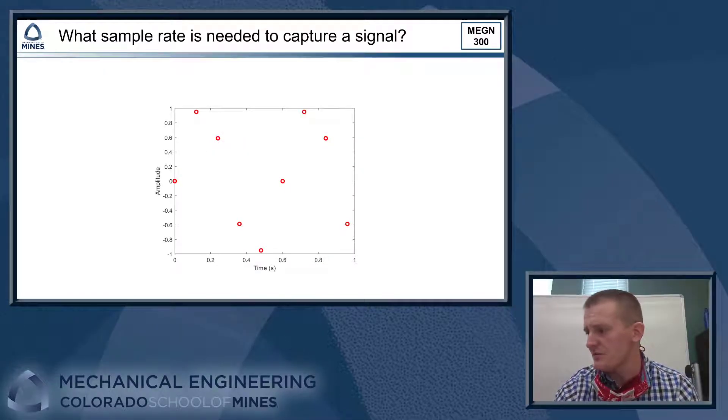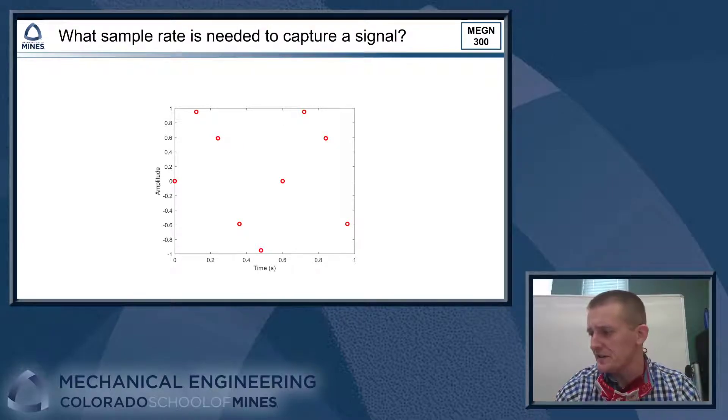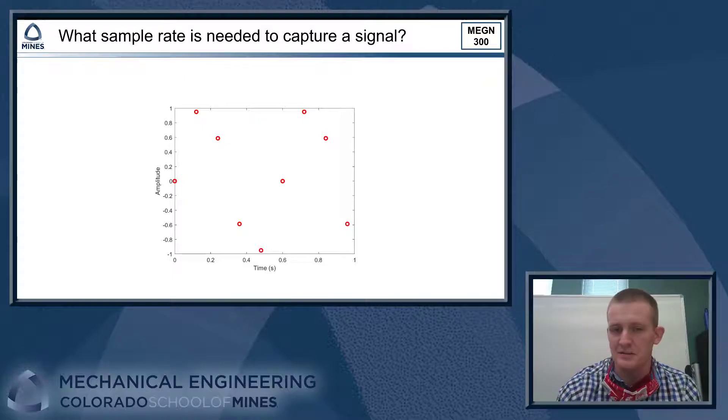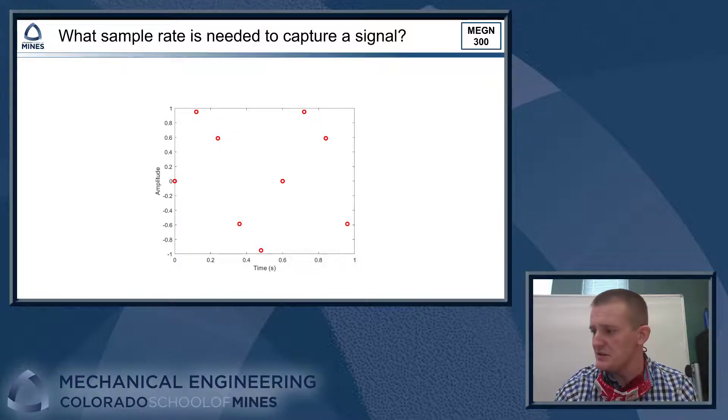So we're going to start off with just an example. If I'm collecting data, I know my signal is changing with respect to time, and I'm trying to figure out what the frequency of this signal is. I'm going to collect some data. I'll get some data points that look something like this. So you can see we've got time down on the x-axis, an amplitude up on the y-axis, and here's the data points I've collected.